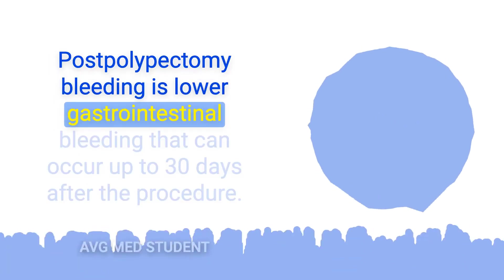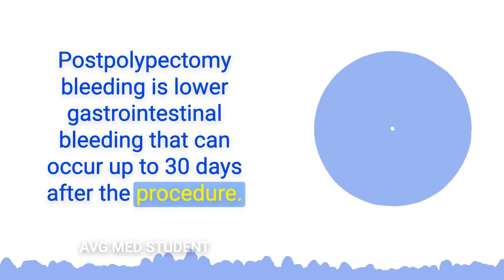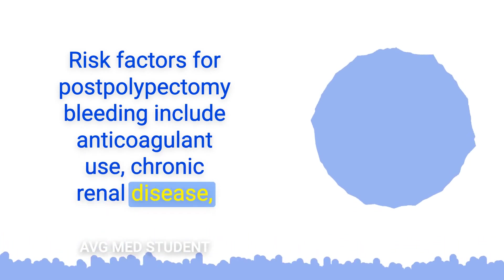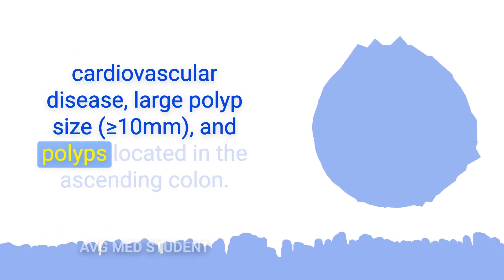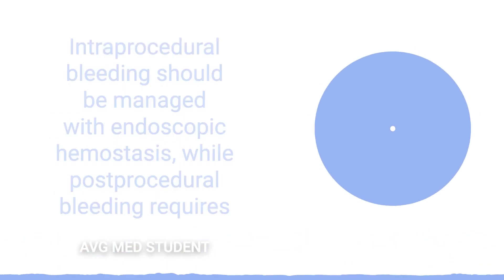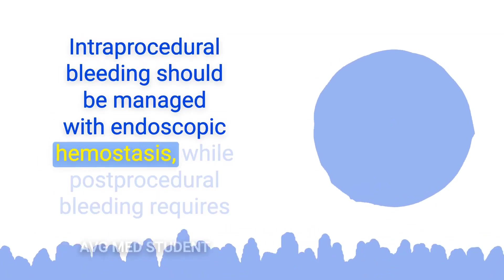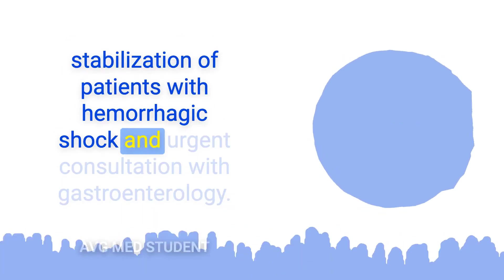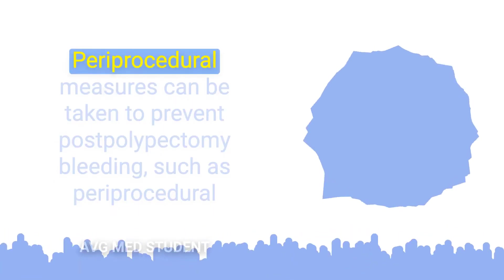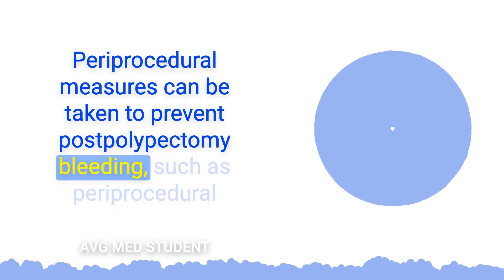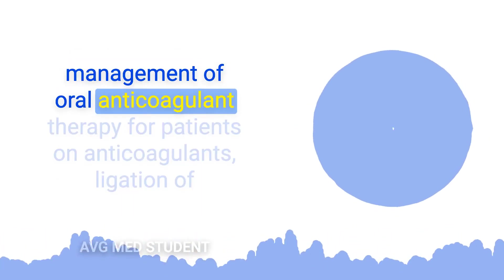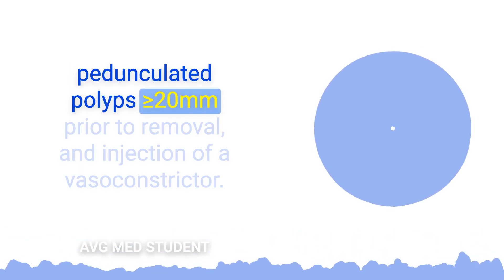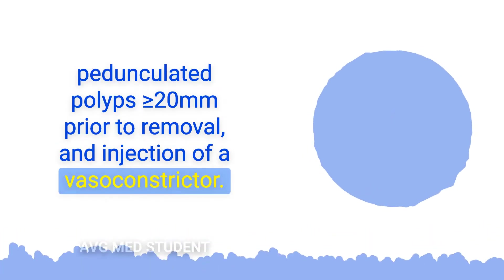Post-polypectomy bleeding is lower gastrointestinal bleeding that can occur up to 30 days after the procedure. Risk factors include anticoagulant use, chronic renal disease, cardiovascular disease, large polyp size, and polyps located in the ascending colon. Intraprocedural bleeding should be managed with endoscopic hemostasis, while post-procedural bleeding requires stabilization of patients with hemorrhagic shock and urgent gastroenterology consultation. Preventive measures include periprocedural management of oral anticoagulant therapy, ligation of pedunculated polyps greater than or equal to 20 mm prior to removal, and injection of a vasoconstrictor.